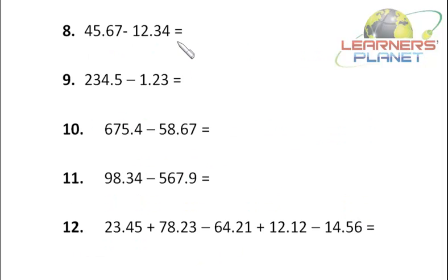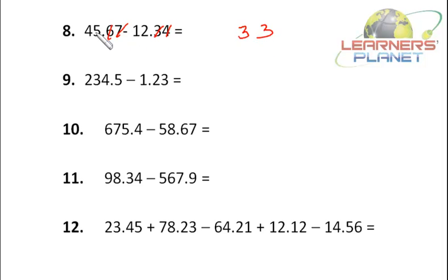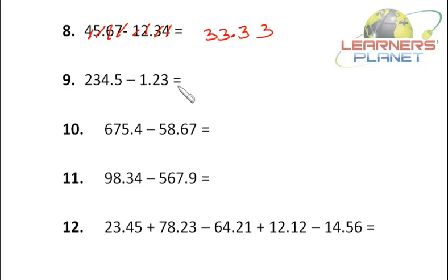Now let's take this problem: 7 minus 4 is 3, 6 minus 3 is 3, I put a decimal, then 5 minus 2 is 3, then 4 minus 1 is 3. Isn't it simple, friends?